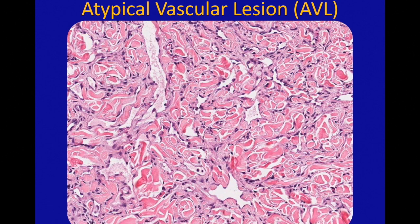They do not usually have mitoses. They do not usually have pleomorphism. So those really atypical features of angiosarcoma are usually lacking in AVL. But you can have some hyperchromasia, and you definitely can have infiltrative growth.